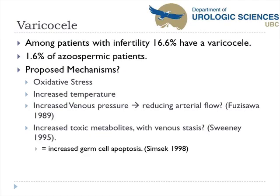Varicoceles have an incidence of about 16% in the infertile population and 1.6% in the azoospermic population. Various proposed mechanisms include oxidative stress, increased temperature — which also increases oxidative stress susceptibility — increased venous pressures, decreased arterial pressures, and increased toxic metabolites from venous stasis, either from the adrenal or local testicular metabolism. All these contribute to increased germ cell apoptosis.